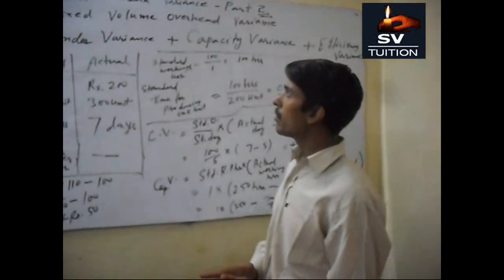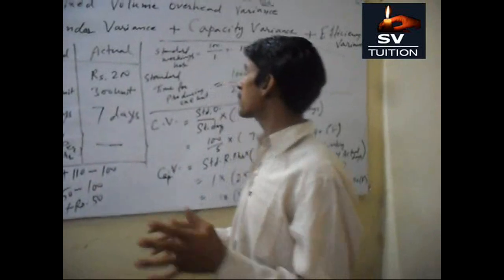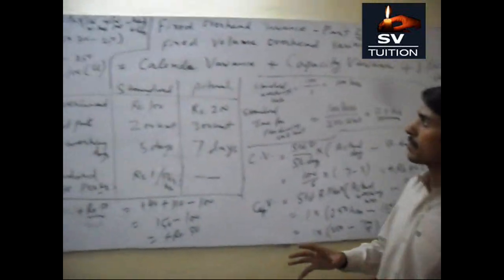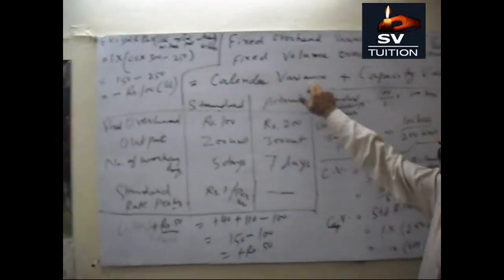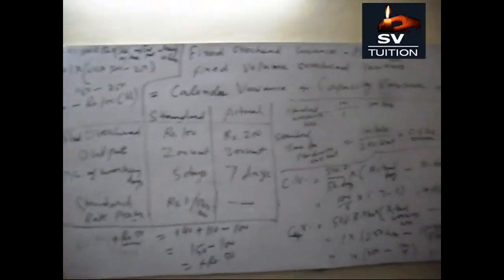In this part we will explain fixed volume overhead variance. Actually this is the sum of calendar variance, capacity variance and efficiency variance.